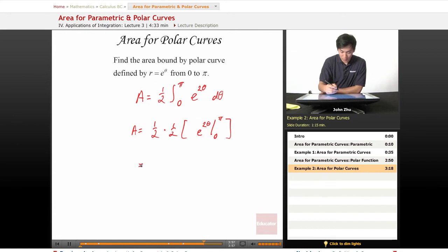And if we evaluate this, we get something like 1 over 4 times e to the 2 pi minus e to the 0, which is 1.